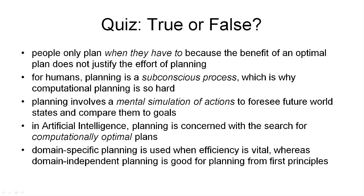Here is a little quiz to test your understanding so far. The following five statements are either true or false — please tick the boxes for the statements that are true. The first statement — people only plan when they have to, because the benefit of an optimal plan does not justify the effort of planning — is true. The second statement — for humans, planning is a subconscious process, which is why computational planning is so hard — is false. The reason is that planning is not a subconscious process; we defined planning as an explicit deliberation process, so it needs to be conscious.